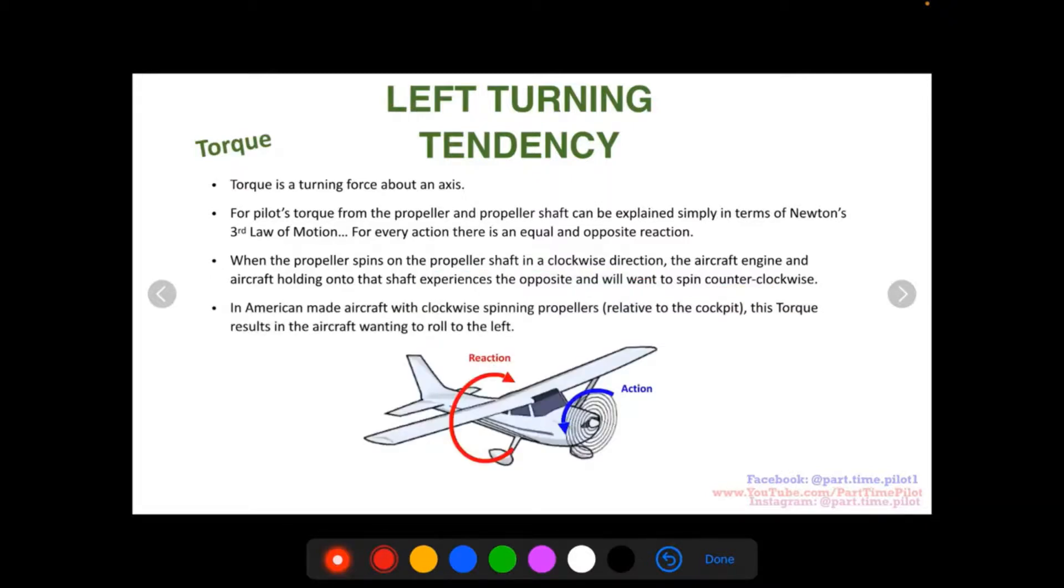it wants to make the aircraft spin the opposite direction counterclockwise. So an American made aircraft with clockwise spinning propellers relative to the cockpit, this torque results in the aircraft wanting to roll to the left. So as you can see,